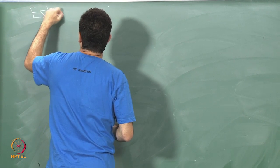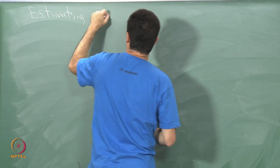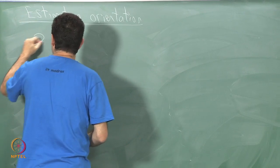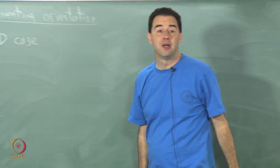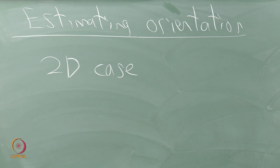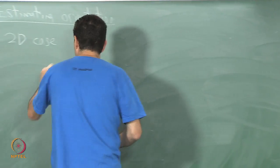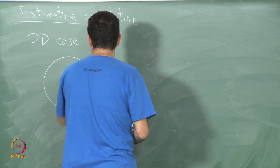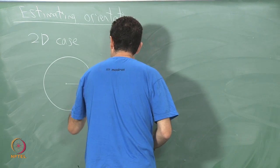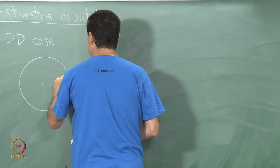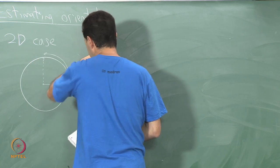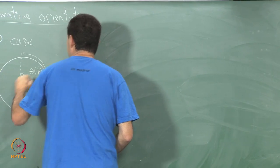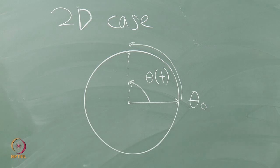Let's jump down to a very simple case: the 2D case, which in terms of the space of orientation is just one-dimensional. Imagine I just have a spinning wheel, and maybe I have some kind of marker on this wheel pointing in some location. I'll say that initial orientation theta is 0, and over time this wheel starts rotating and ends up being at some angle theta of t. This wheel is spinning and maybe its rate is changing as it goes.